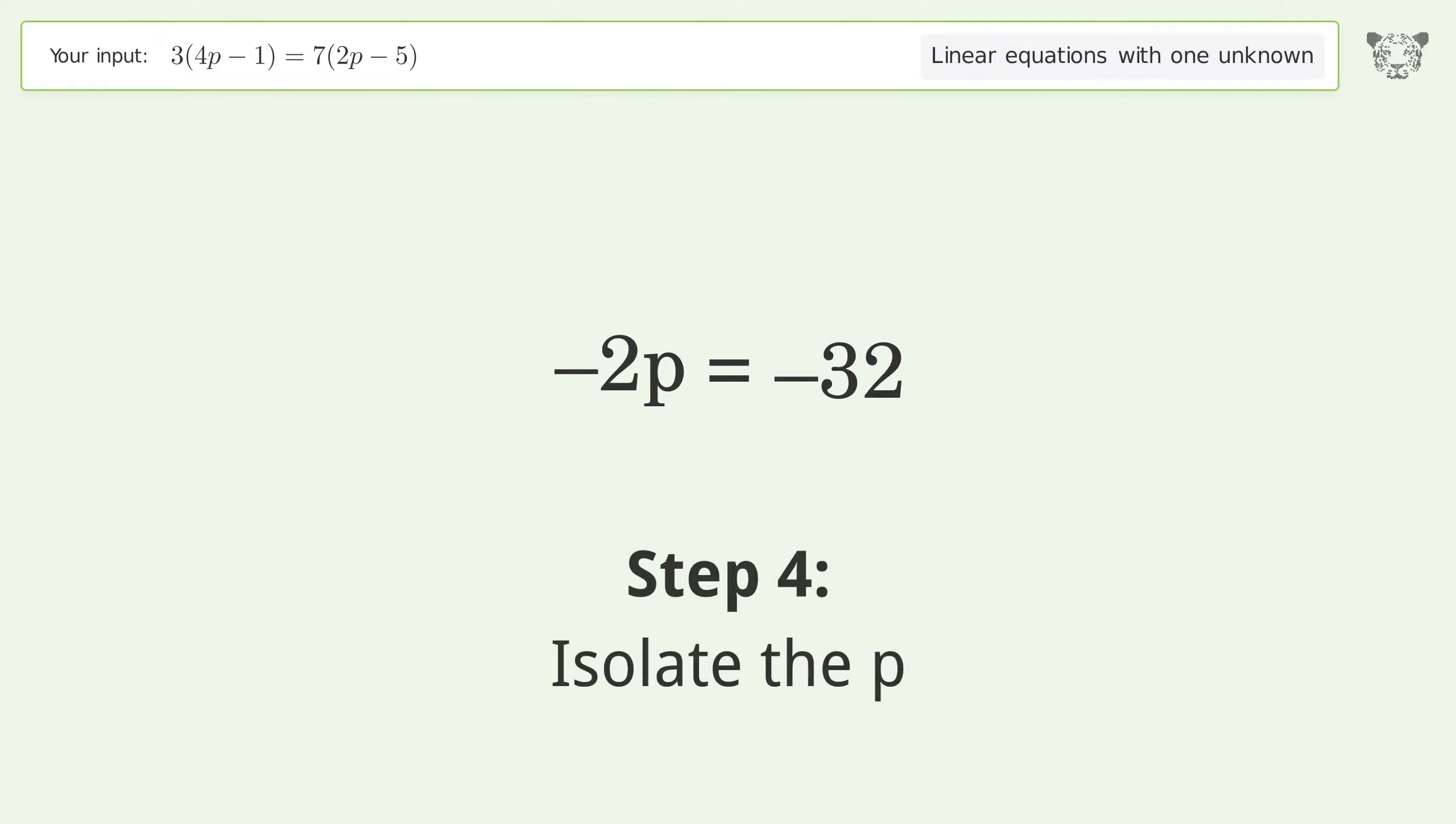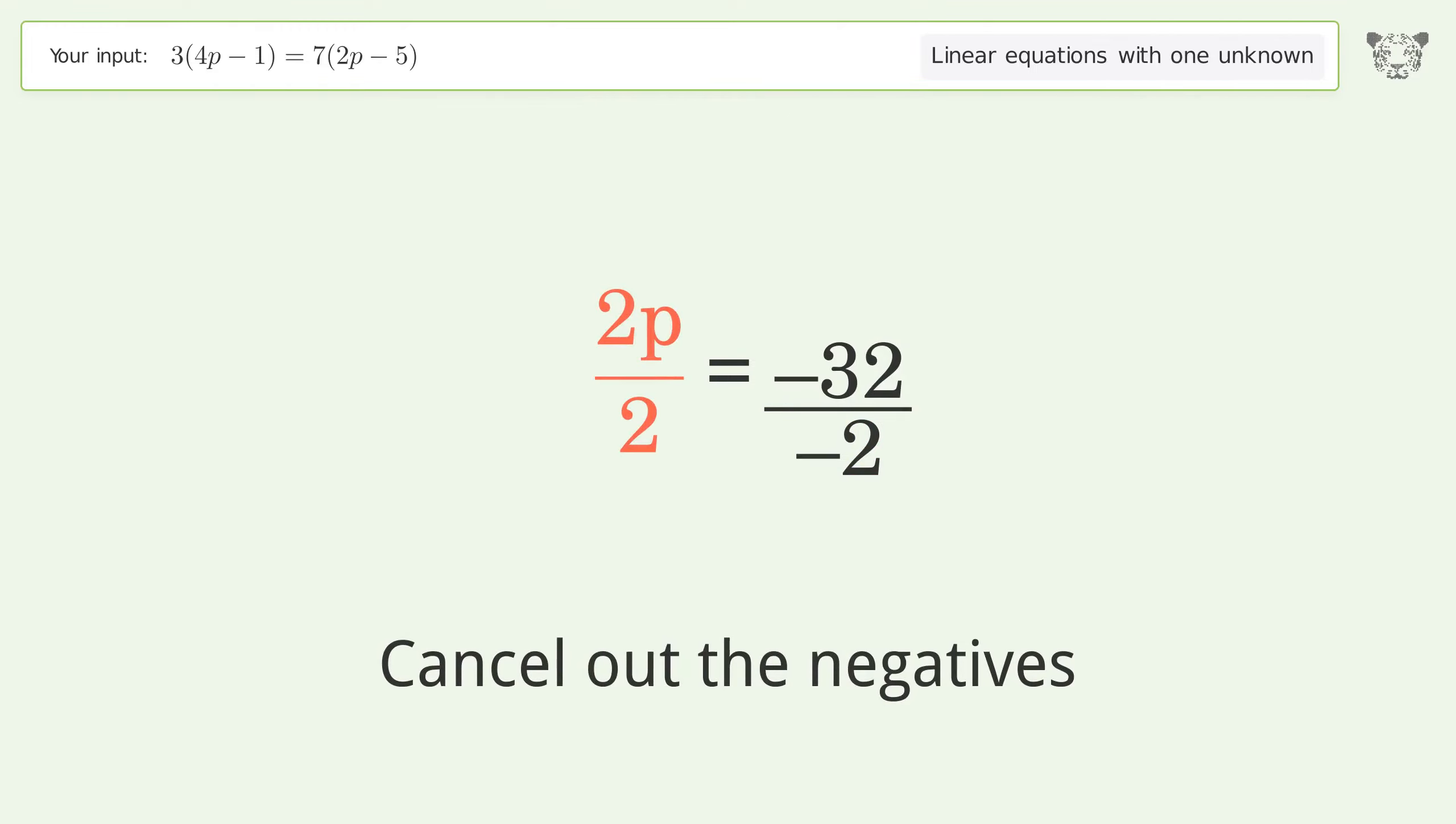Isolate p by dividing both sides by negative 2. Cancel out the negatives and simplify the fraction.